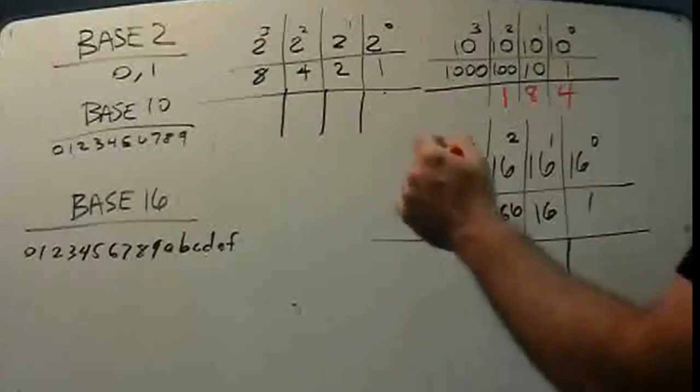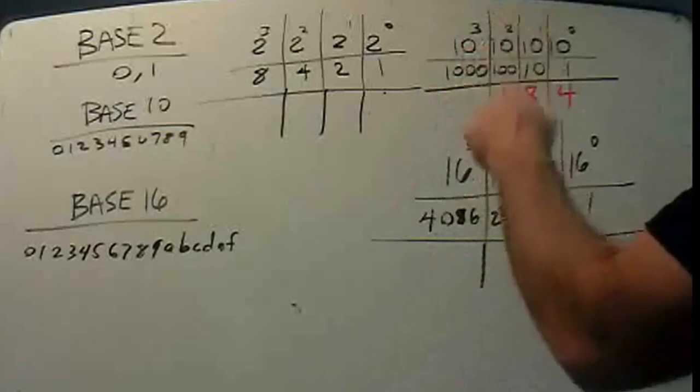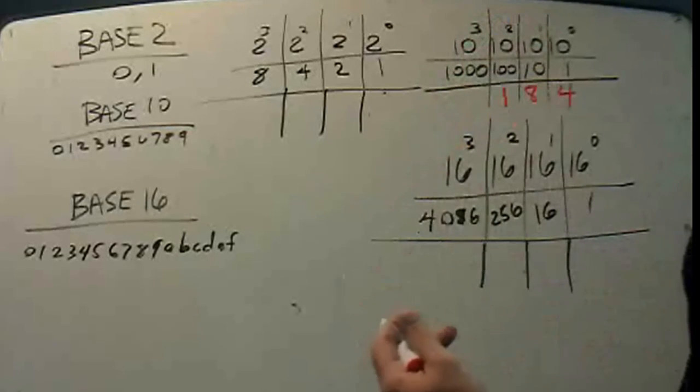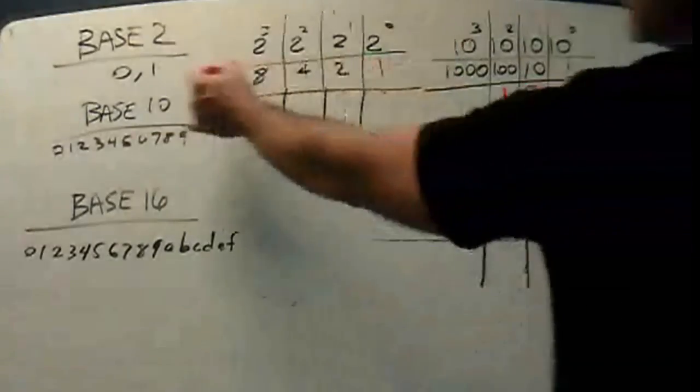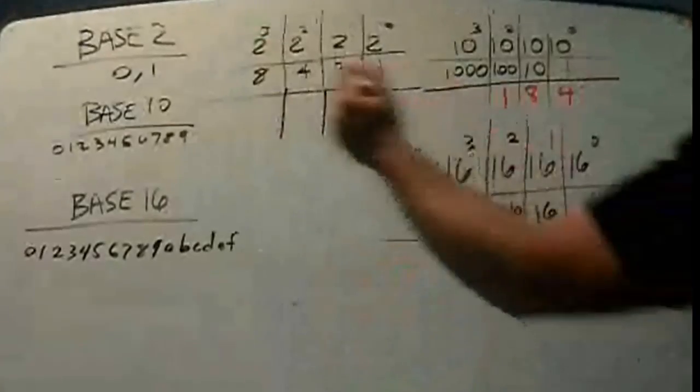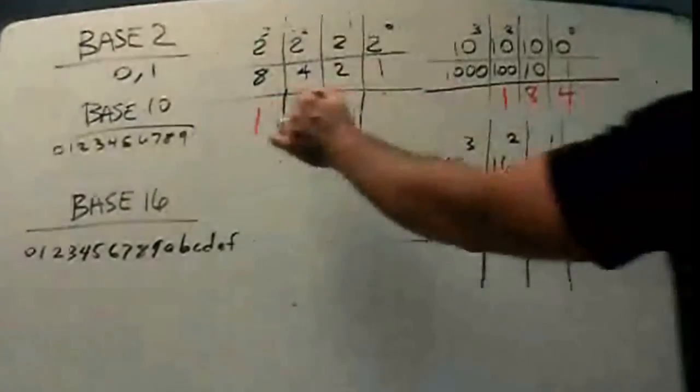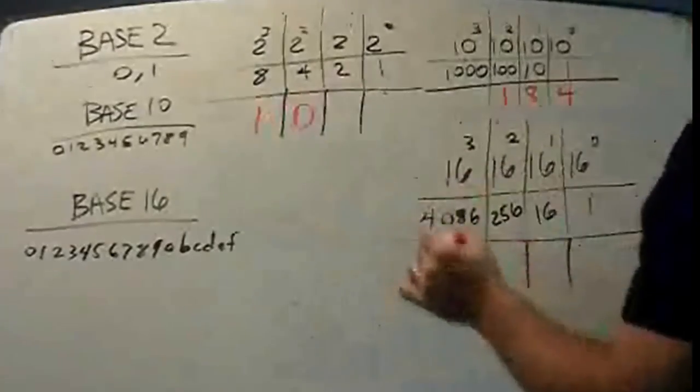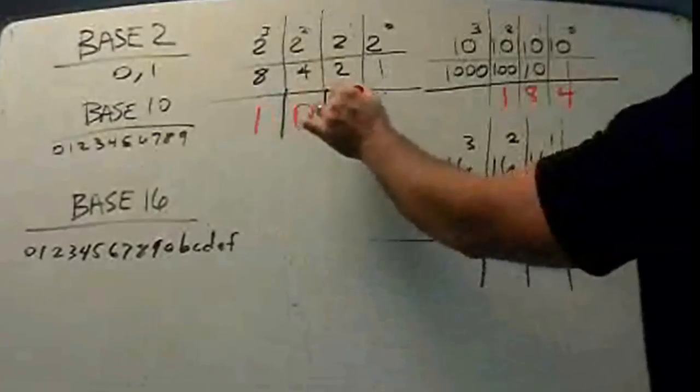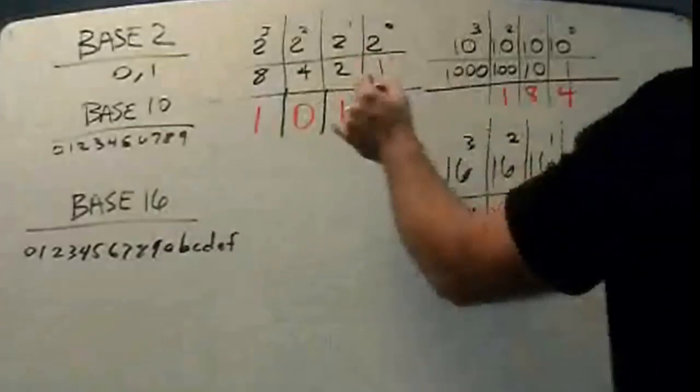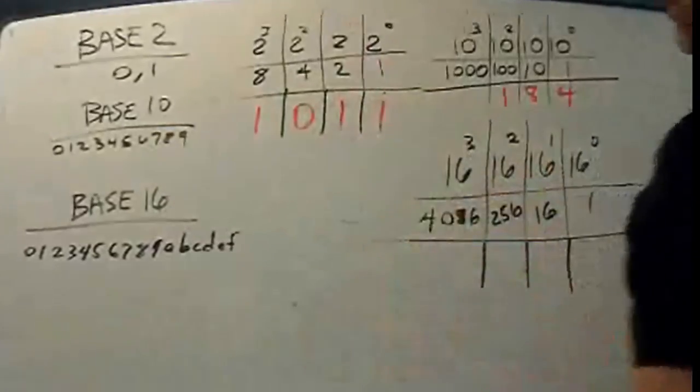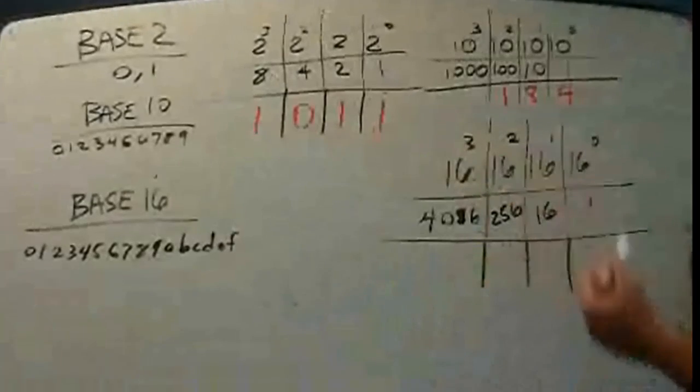And if we wanted to say, write a number like 11, I only have 4 place values here, so I'm just going to do the number 11. Then I'd need 1 eight, I'd need 0 in the 4's place, and I'd need a 1 in the 2's place, and I'd need a 1 in the 1's place, and now I'd have the number 11 in binary.